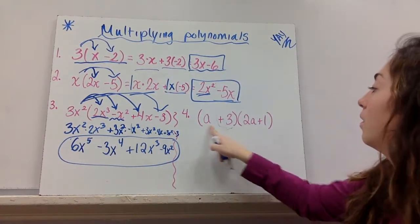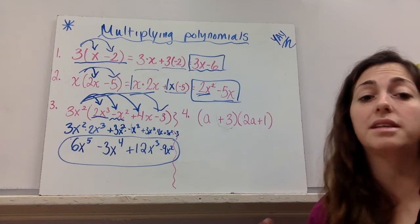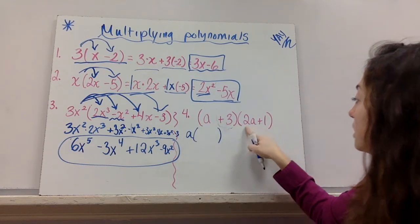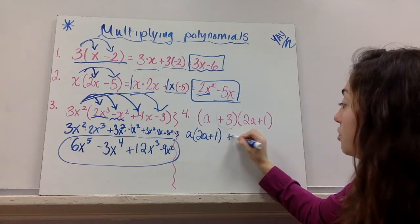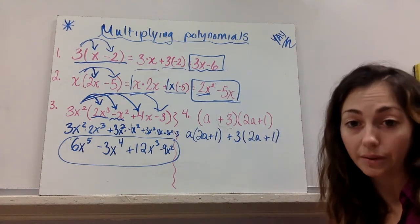So now I've got, uh-oh, no more monomials. I've got a binomial times a binomial. It's still the same thing. You still have to multiply a times 2a and 1. And you need to multiply 3 times 2a and 1. Okay?